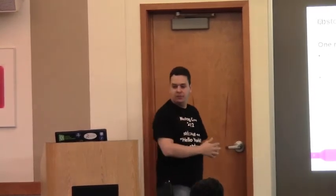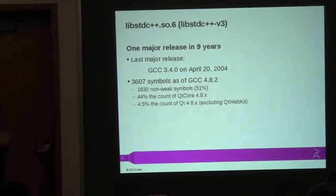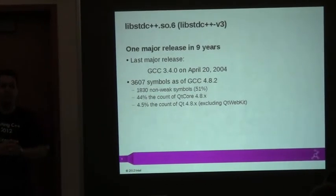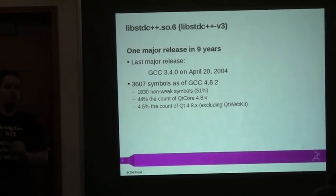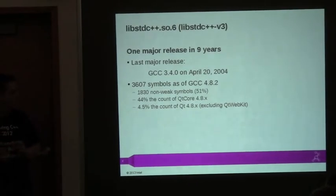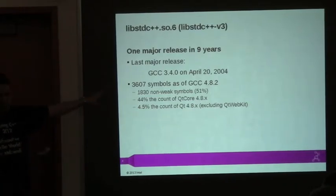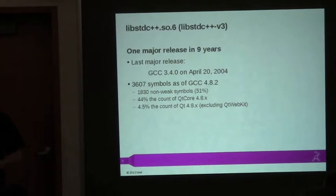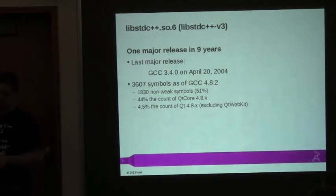Another example of a library that has maintained binary compatibility is GCC's standard library, which has maintained it for nine years — even longer than Qt. The last major release was in 2004. They've kept a backlog of changes they would like to make when they eventually do break binary compatibility. GCC 4.9 will continue doing this for the foreseeable future. A comment from the audience noted that GCC added C++11 support without breaking binary compatibility, which is very much true.